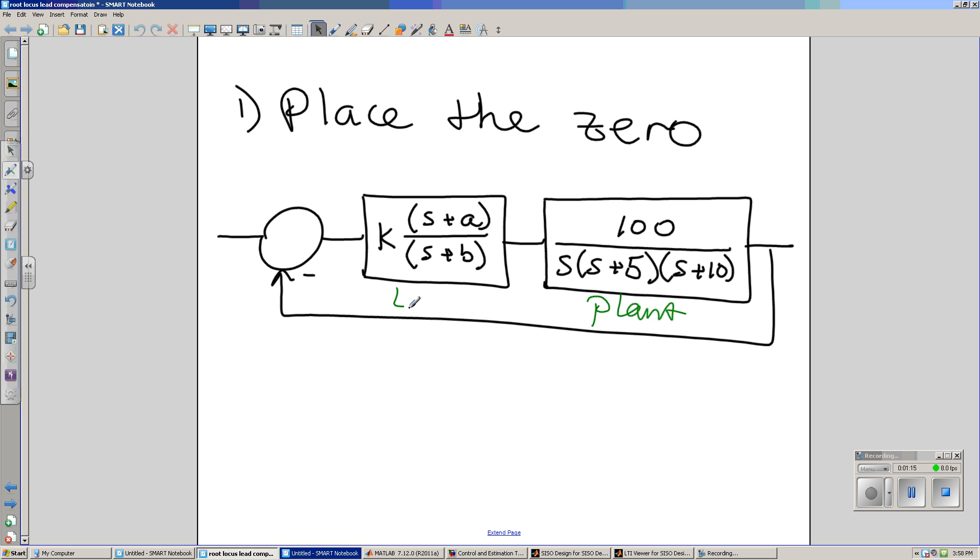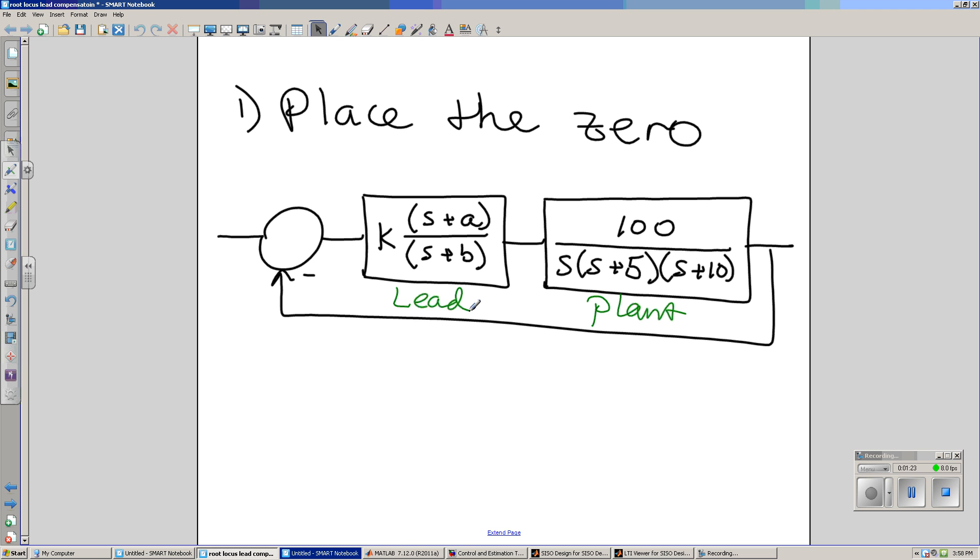Add your lead compensator to speed it up. If I ignore the pole for now and just look at the zero, I can see what happens in MATLAB as I add the zero.